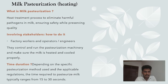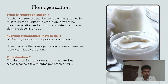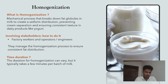Milk pasteurization is a heat treatment process to eliminate harmful pathogens. Quality control, factory workers, and ingredients are the main stakeholders in this stage; the time required typically ranges from 15 to 30 seconds. Homogenization is a mechanical process that breaks down fat globules in milk to create a uniform distribution, preventing cream separation and ensuring consistent texture in dairy products like yogurt. Factory workers and engineers are the main stakeholders; the time required is typically a few minutes.